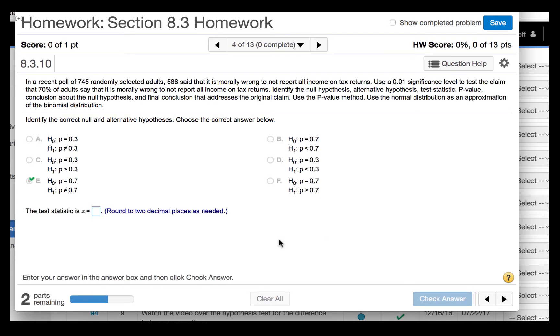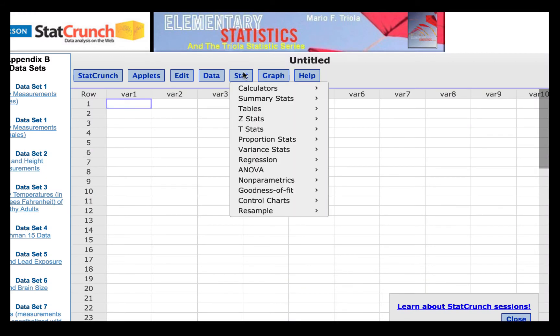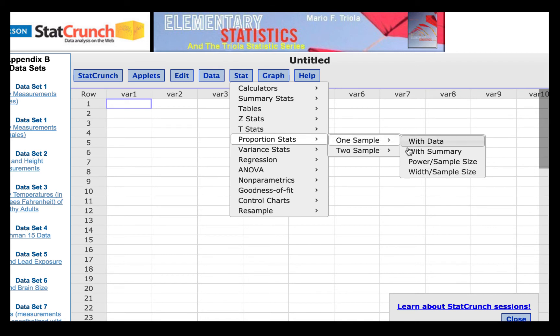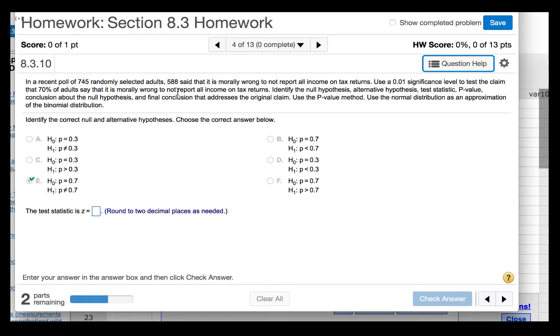We are to find the test statistic using StatCrunch. We'll press Question Help, StatCrunch, and then click Stat, Proportion Stats, One Sample, With Summary. The problem said that 588 out of 745 responded that it is morally wrong. So the number of successes is 588, and the number of observations is 745.